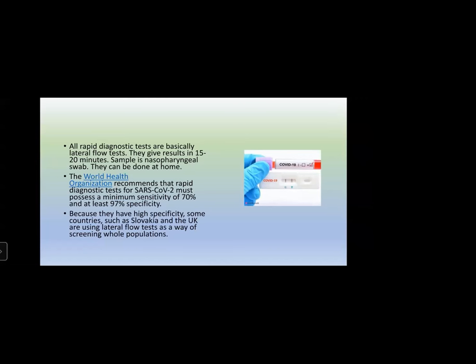The control line contains antibody against human IgG, which is always present in a sample, so a band will appear. WHO recommends rapid diagnostic tests for SARS-CoV-2 must possess a minimum sensitivity of 70% and at least 97% specificity. Most tests claim to meet this, although sensitivity is not very high. Because of their high specificity, countries like Slovakia and the United Kingdom are using these lateral flow or ICT tests for screening the whole population.